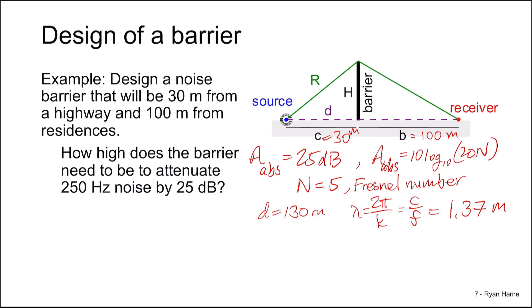Now, our Fresnel number is equal to 2 on lambda multiplied by R minus D. So that we can solve for R, and it's around 133 meters.